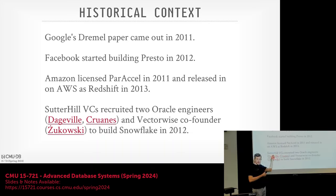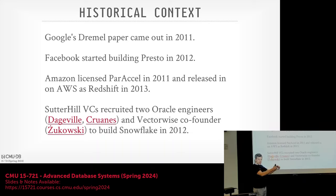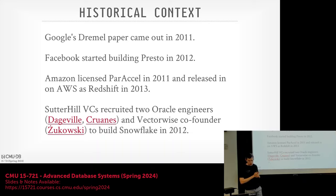Sutter Hill is different from most VC firms like Andreessen Horowitz, Kleiner Perkins, or Greylock, where you pitch them an idea and they give you money. Sutter Hill is basically like putting together a boy band at a record label — they select good people, put them in a room, give them money, and dictate what to build. That's how Snowflake came about.